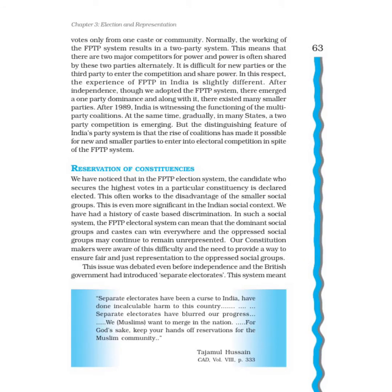In the FPTP election system, the candidate who secures the highest votes in a particular constituency is declared elected. This often works to the disadvantage of smaller social groups, which is even more significant in the Indian social context. Given our history of caste-based discrimination, the FPTP — First Past The Post — electoral system can mean that dominant social groups and castes can win everywhere, while oppressed social groups may continue to remain unrepresented.